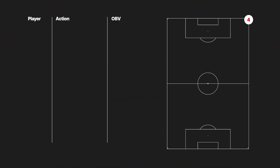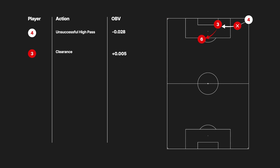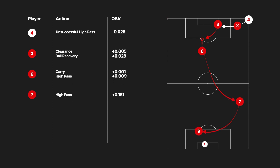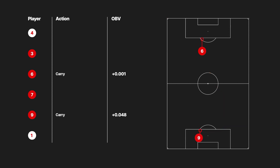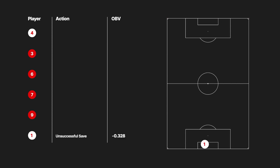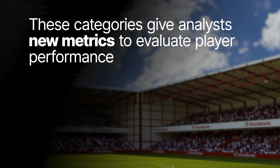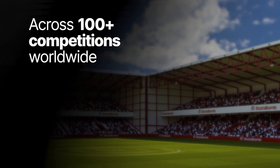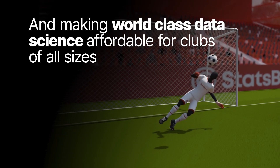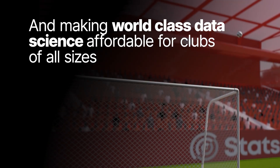Throughout every game, events — both successful and unsuccessful — from every player are measured to produce their total OBV contribution towards the final result. The unique design of our OBV model makes it possible to split these events into categories: Pass OBV, Dribble and carry OBV, Defensive action OBV, Shot OBV, and Goalkeeper OBV. These categories give analysts new metrics to evaluate player performance across more than 100 competitions worldwide, and make world-class data science affordable for clubs of all sizes.